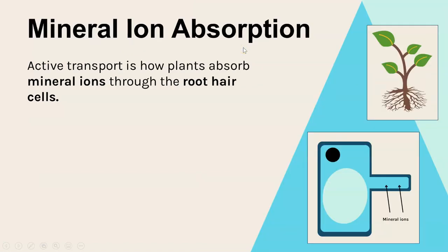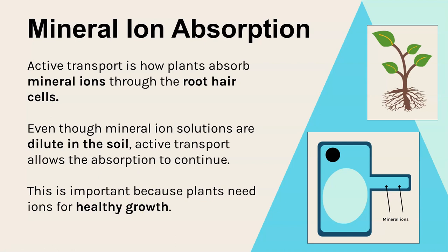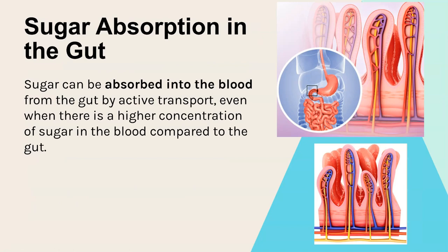There are two key examples you need to know for AQA. The first is that active transport is how plants absorb mineral ions from the soil into their root hair cells. The roots have root hair cells with that long protruding section, and the soil doesn't actually have a very concentrated solution of mineral ions - especially compared to the concentration already within the cell. But the plant still needs lots of mineral ions continuously because they are really important for healthy growth. That is why active transport occurs - to move mineral ions against the concentration gradient into the plant.